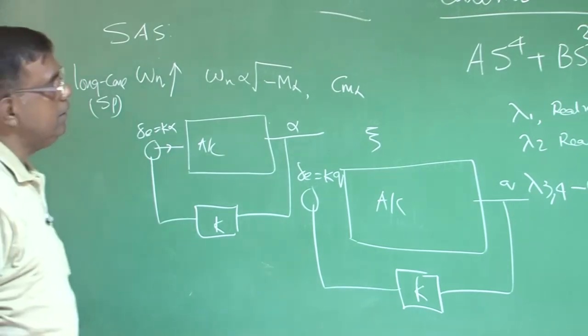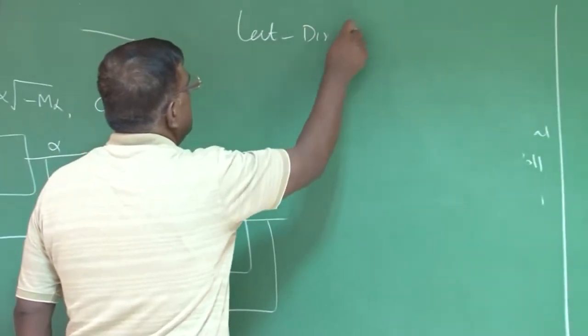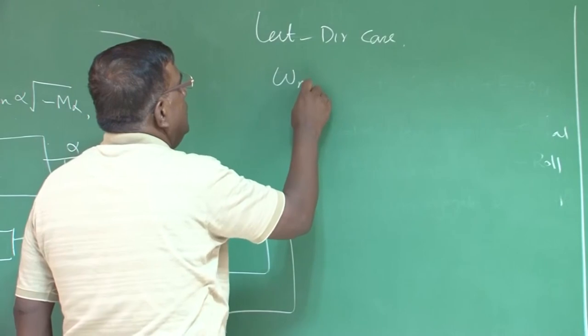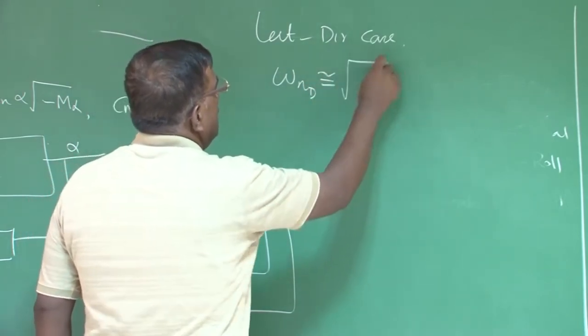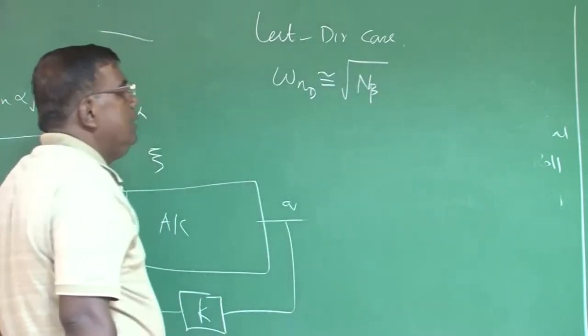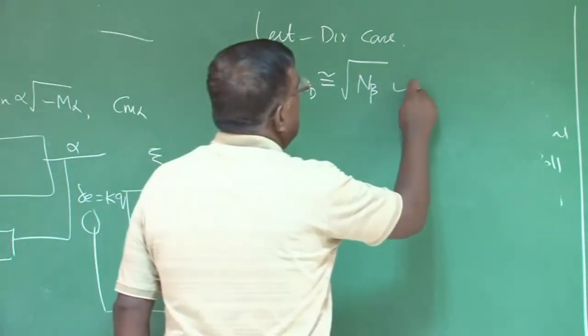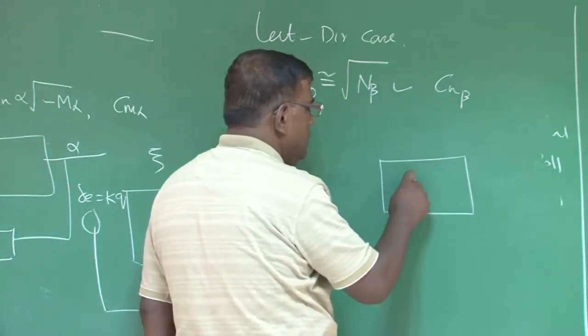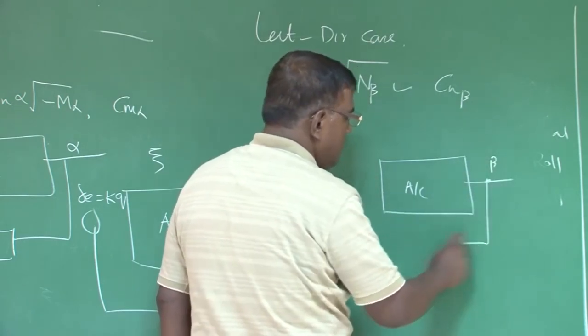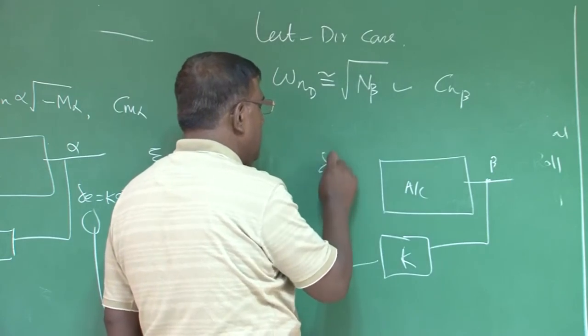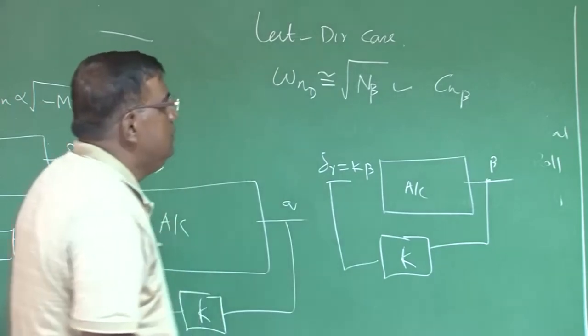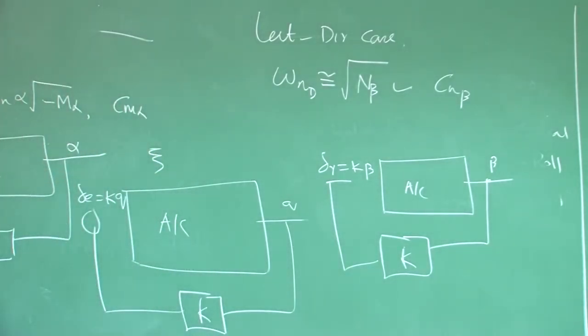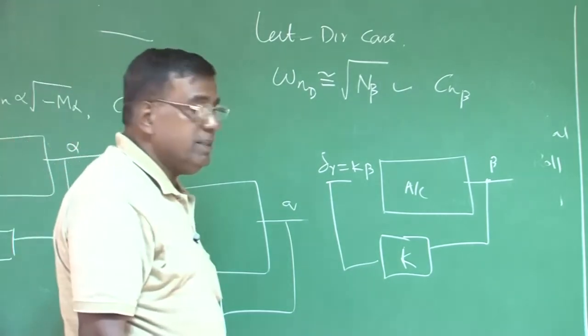Similar thing, we did for lateral directional case. For lateral directional case, we realized if I want to change the lateral dutch roll frequency of the airplane, it is directly proportional to N_beta or C_n_beta. So if I want to increase or change omega_n dutch roll, I have to change C_n_beta. And for that, logic was very simple. The aircraft should tap the beta, multiply it with k and give delta_r = k beta.